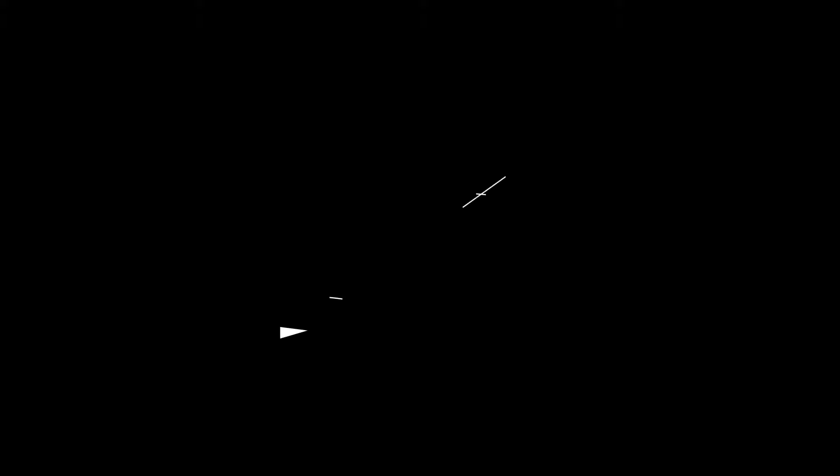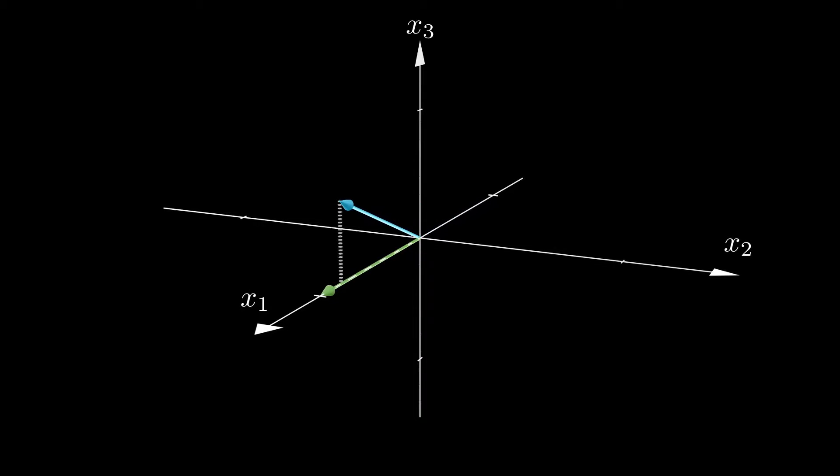The same can be seen in our three-dimensional example. The component of our wave function psi along the x1 direction is just the inner product between the x1 basis vector and the wave function vector.